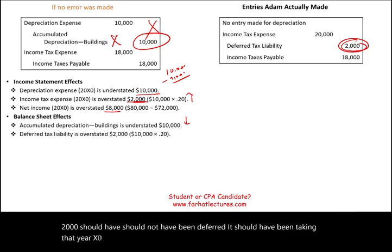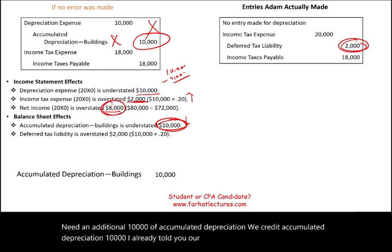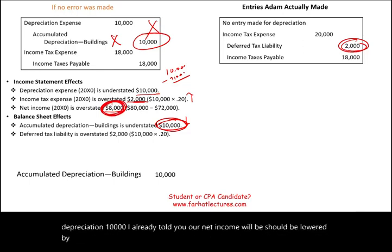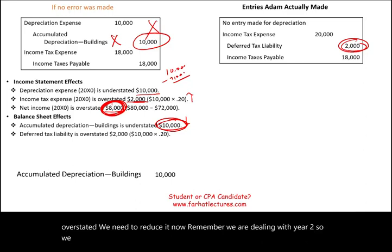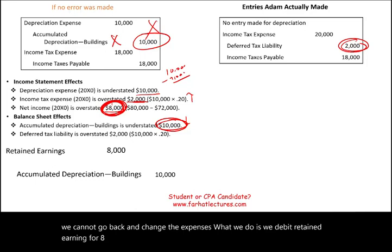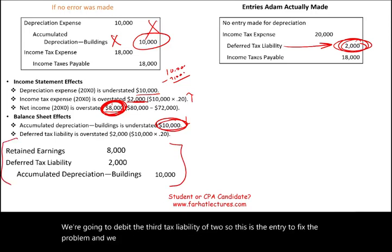To fix the problem, the correcting entry is: credit accumulated depreciation $10,000; debit retained earnings $8,000 (to reduce the overstated net income since we're in year two and can't change prior expenses); and debit deferred tax liability $2,000 (to remove the liability that should not exist). This entry corrects all three misstatements.